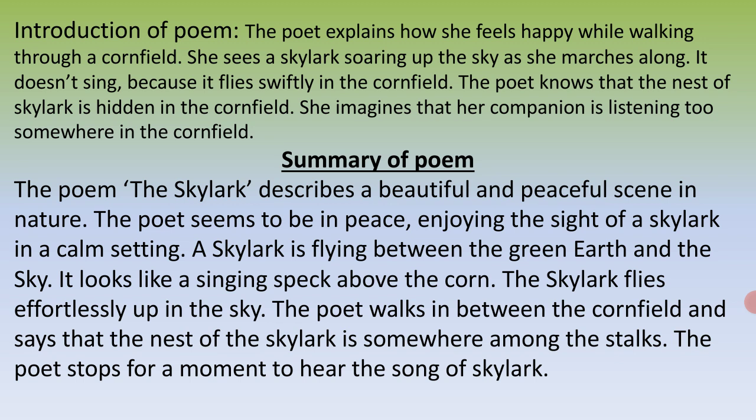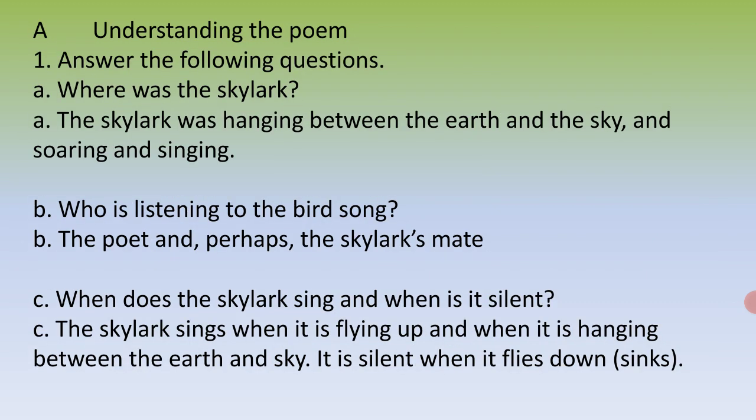Summary of the poem: The poem 'The Skylark' describes a beautiful and peaceful scene in nature. The poet seems to be at peace, enjoying the sight of a Skylark in a calm setting. A Skylark is flying between the green earth and the sky, looking like a singing speck above the corn. The poet walks through the cornfield and says the nest of the Skylark is somewhere among the stalks. The poet stops for a moment to hear the song of the Skylark.